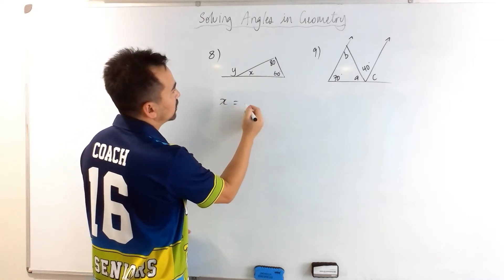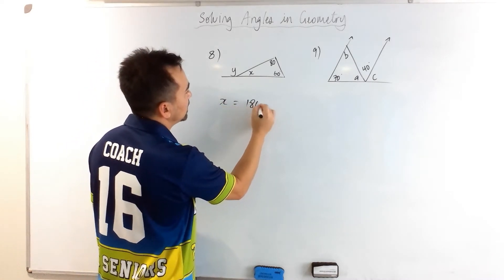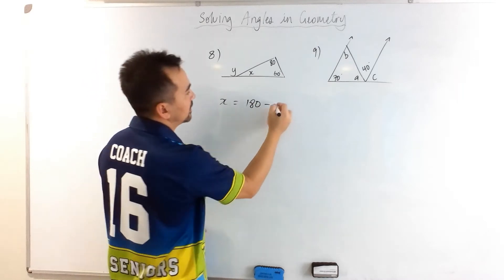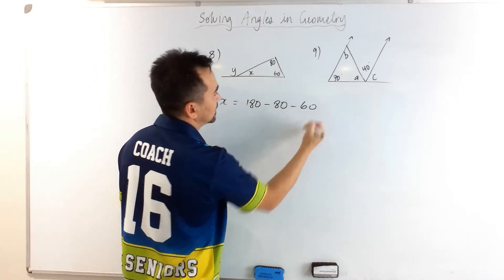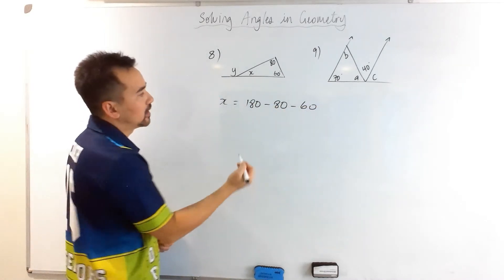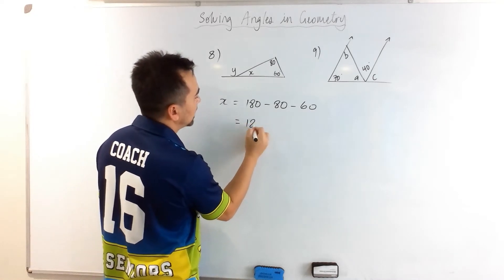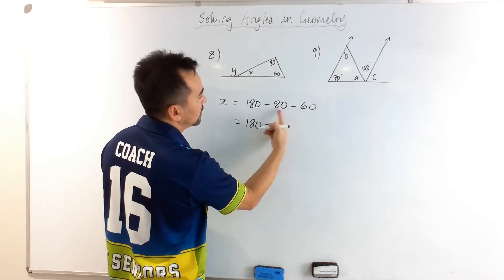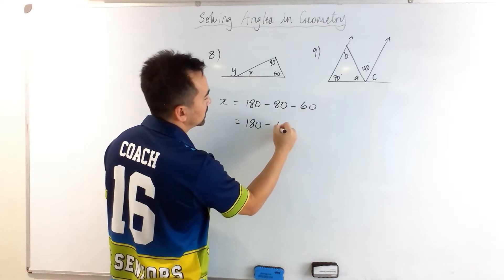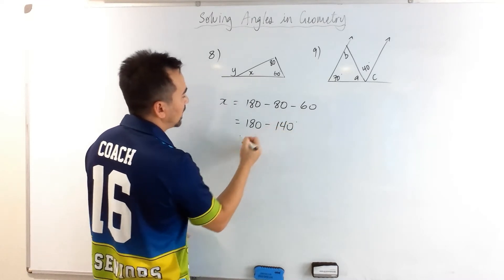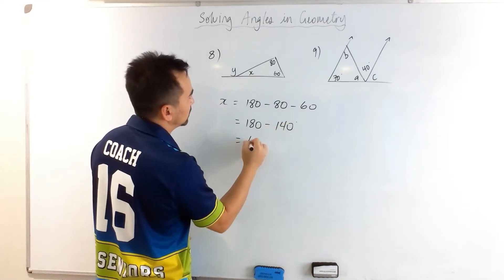So x is going to be 180 take away 80 take away 60. Or otherwise, we could say it's equal to 180 take away the sum of those two, which is 140, and so x is equal to 40 degrees.